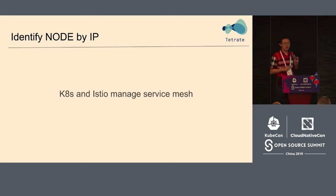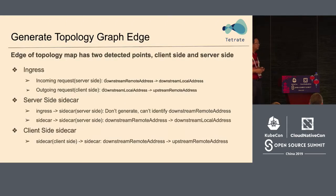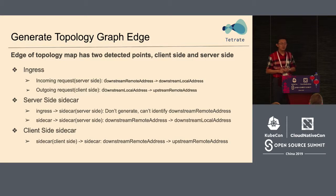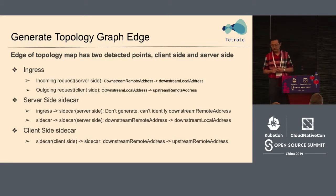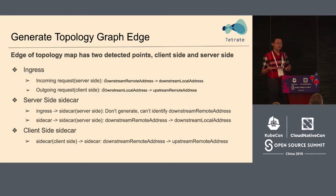I skipped some previous slides because there are many things specific to the Kubernetes platform. One very special thing you wouldn't normally see is this: the data here doesn't have the concept of a pod. What you see is an IP address. For the service mesh on Kubernetes, in a specific point in time, there would not be two pods sharing one IP — every IP is distinctive.